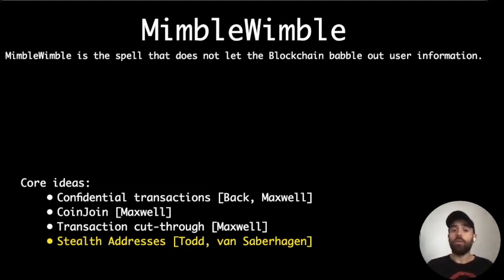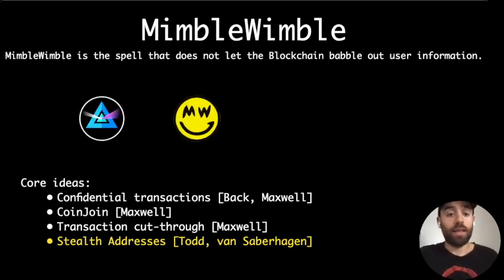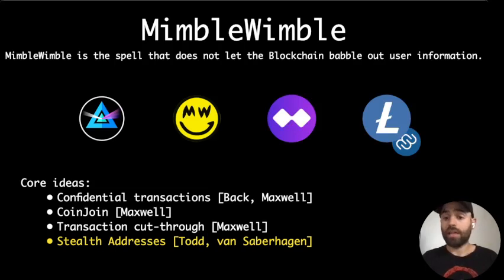In this talk we will use another key idea, namely stealth addresses, initially proposed in CryptoNote and now used in cryptocurrencies such as Monero. Since 2016, a number of cryptocurrencies have started to use MimbleWimble, like Beam or Grin, and more recently MimbleWimble Coin or an extension of Litecoin called Mweb.